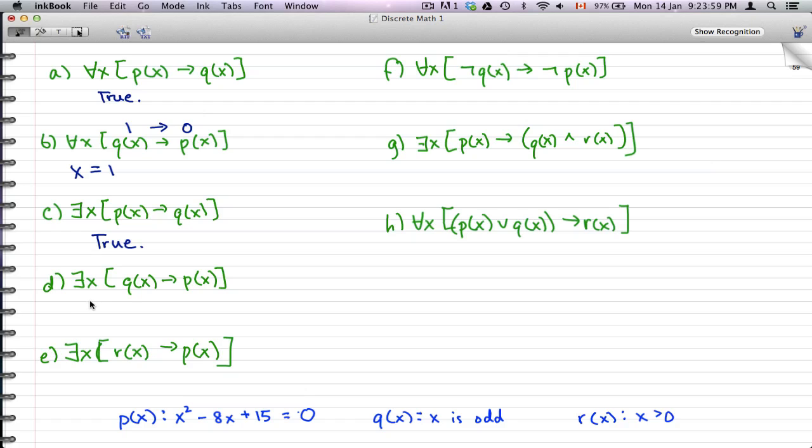d would also be true. And how you're gonna get this is, again, you just have to trial and error, just plug in x's and see if you could just get one of those x's to fit the bill to make this statement true. And then you'll get the truth for d. e is also true, and again, just go through the same process. f would also be true. g is true. And h is false, and we could give a counter example of x equals negative one. And you'll find out that this whole statement would end up to be one implies zero, which is false.